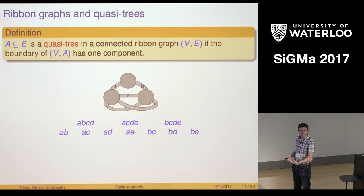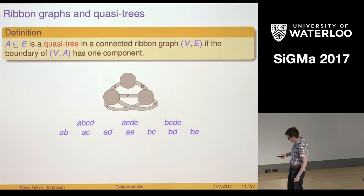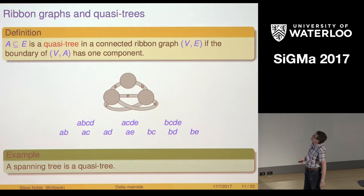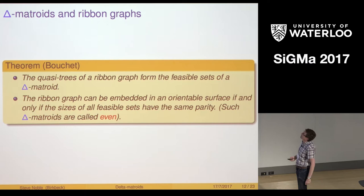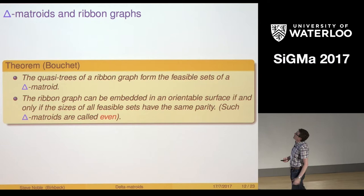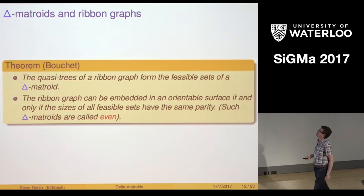On the other hand if I took for example ABE, that's the triangle, then the triangle has an inside and an outside so I can't walk around all the boundary in one go. That's what the quasi trees are. Simple example: a spanning tree is always a quasi tree so that's why it's generalizing graphs. Boucher proved that the quasi trees form the feasible sets of a delta matroid. A little bit more: if the ribbon graph can be embedded in an orientable surface then the sizes of all the feasible sets have the same parity and we call those even delta matroids.